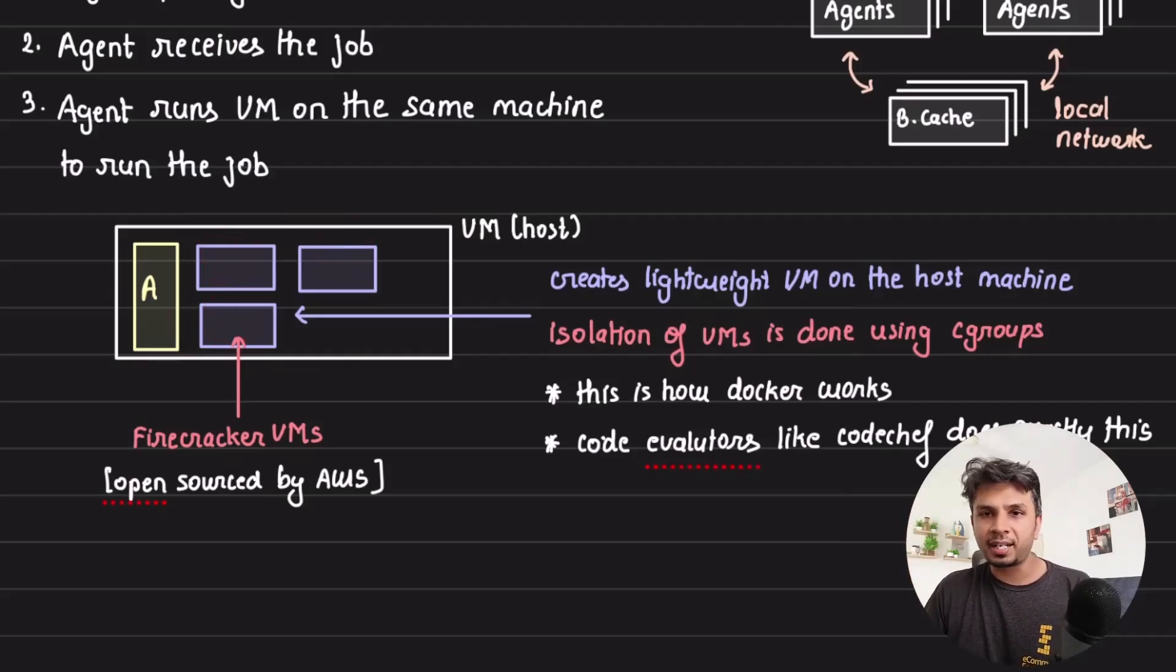So they leverage Firecracker VMs. So on this host machine, an agent process is running, when it receives a job to be executed, it spins up a Firecracker VM, executes the job, whatever the status needs to be communicated, it basically communicates back to the GitHub and whatnot.